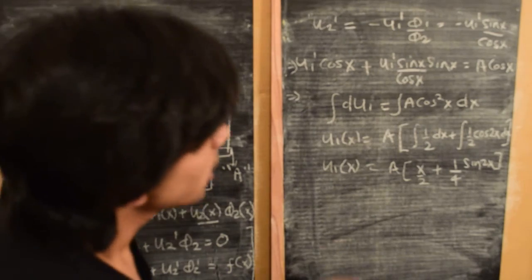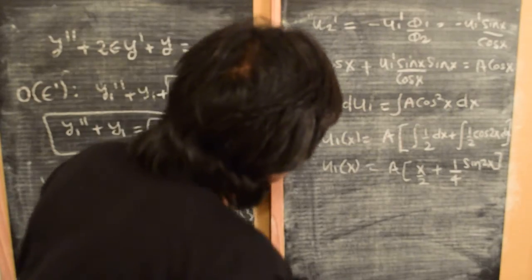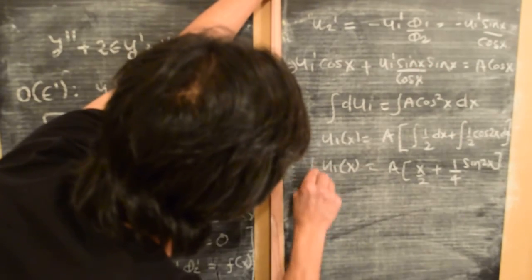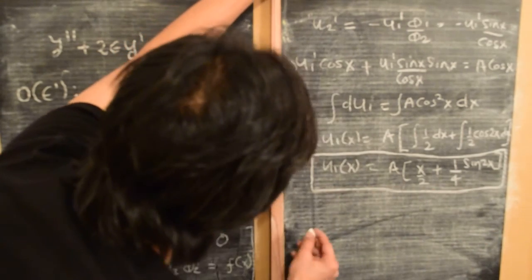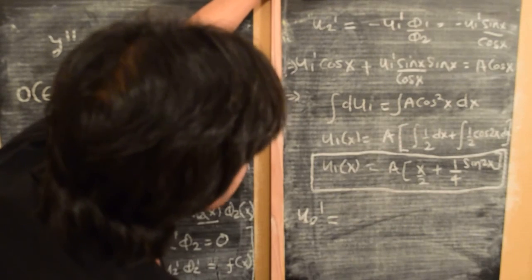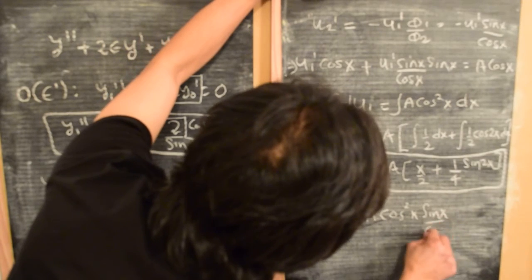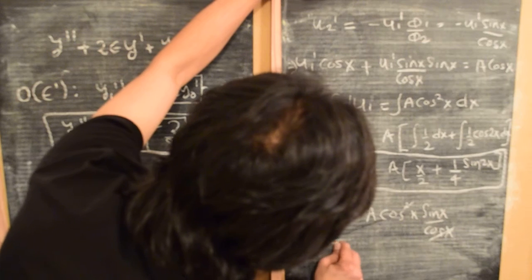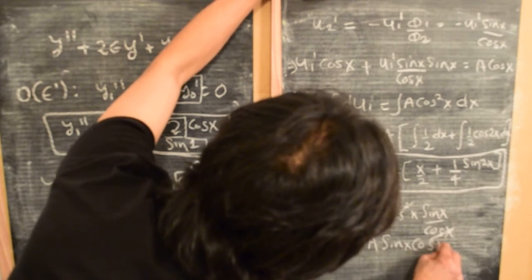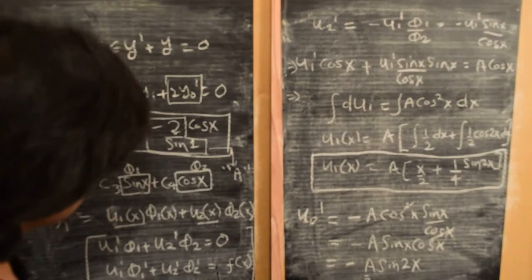Now let's find u₂. We have u₂' = −u₁'·sin(x)/cos(x). Since u₁' = a·cos²(x), this becomes u₂' = −a·cos²(x)·sin(x)/cos(x) = −a·sin(x)·cos(x), which can be written as −(a/2)·sin(2x).